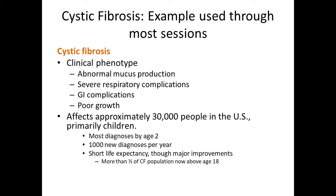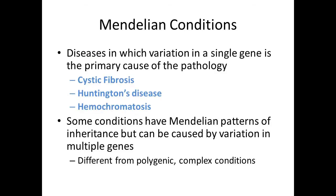Cystic fibrosis provides a great example for this coursework because it is well characterized and the variants associated with disease are well understood. Cystic fibrosis is part of what is called a Mendelian condition — diseases in which variation in a single gene is the primary cause of the pathology. Other examples include Huntington's disease and hemochromatosis.